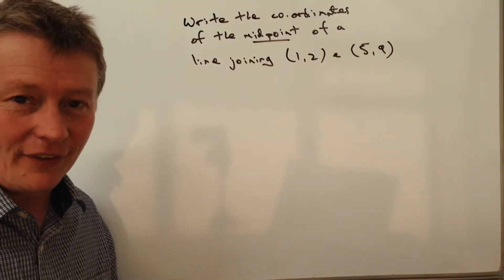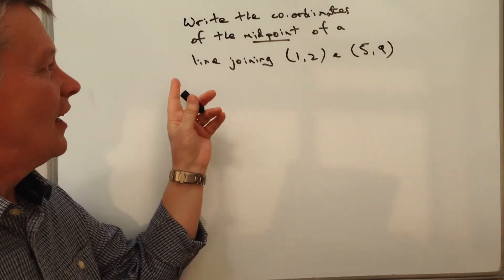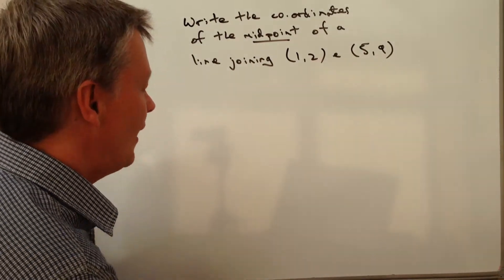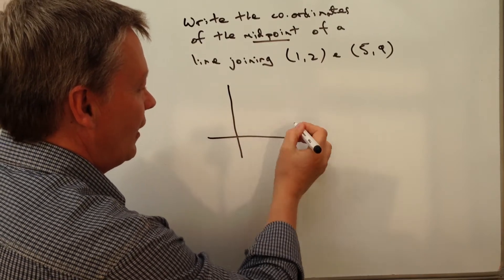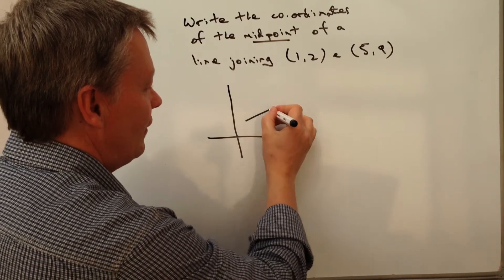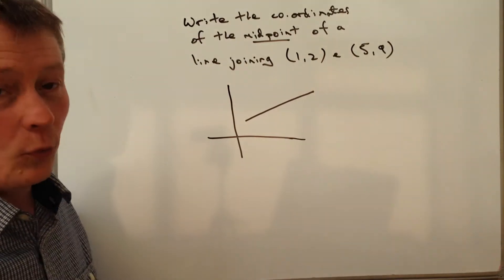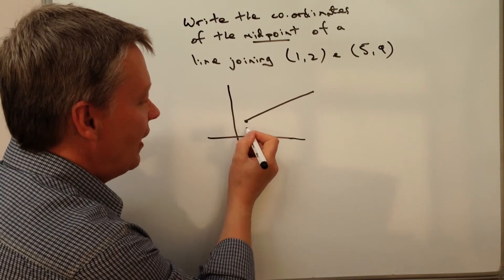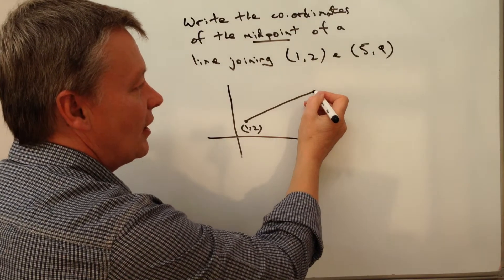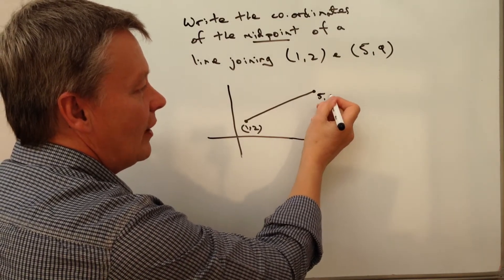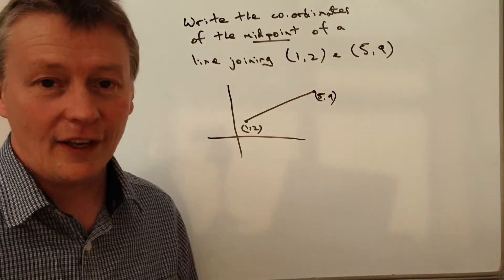So what they mean by that is this is a straight line, and if I plotted that on a graph it would look something like this, where this particular point here is (1,2) and this particular point here is (5,9).